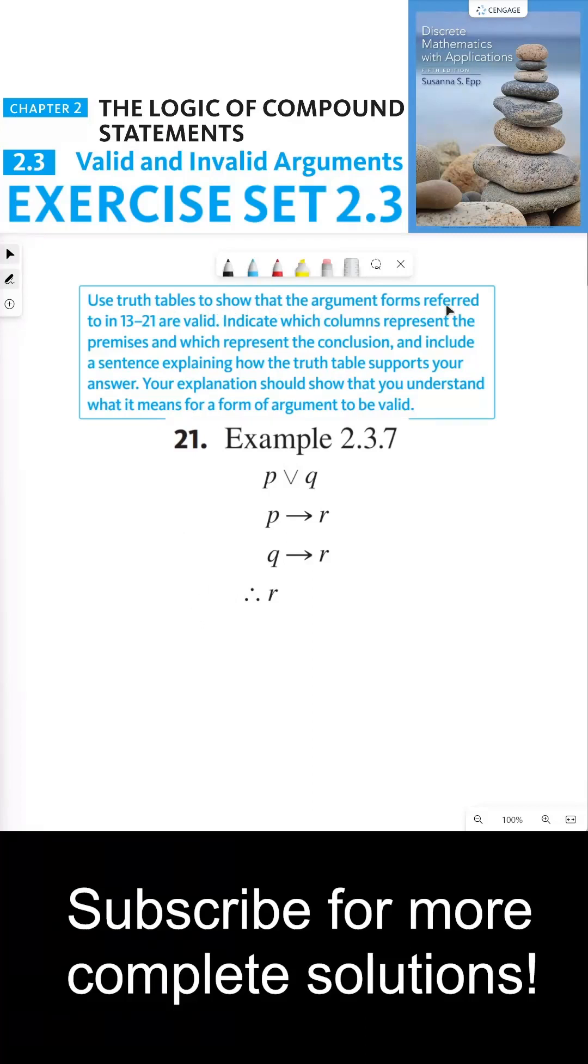Use truth tables to show that the argument forms referred to in 13 through 21 are valid. Indicate which columns represent the premises and which represent the conclusion, and include a sentence explaining how the truth table supports your answer. Your explanation should show that you understand what it means for a form of argument to be valid.